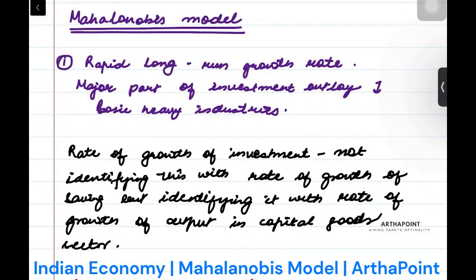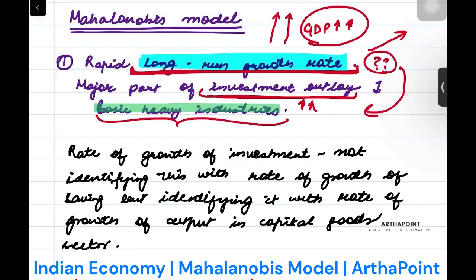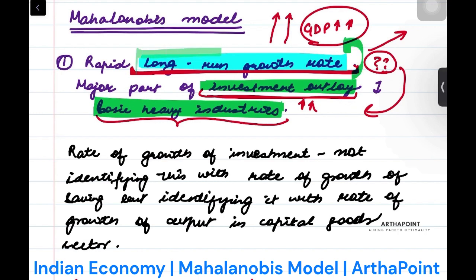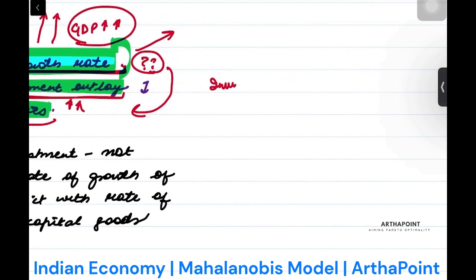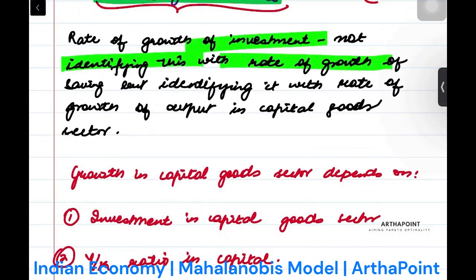Mahalanobis model says we want to go ahead and do a long run growth rate. We want to increase our economy's GDP, we want economy growth. The question is how will this growth come? This growth will come through investment. Where will we invest? We will invest in basic heavy industries. If we invest in heavy industries, we will see a long run growth rate of our economy.